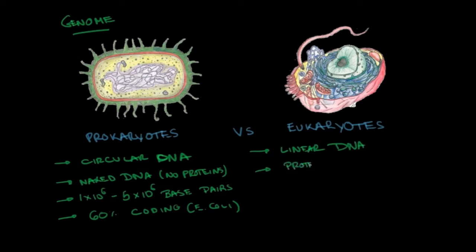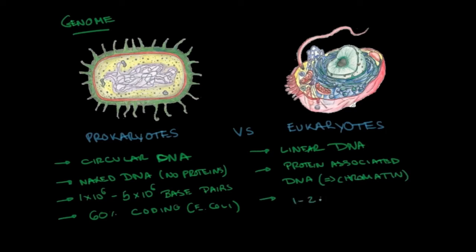In eukaryotes, we see linear DNA that is protein-associated — bound to histones — and we call this chromatin. Another important point about the eukaryotic genome is that only 1 to 2% of the DNA is coding DNA. So only 1 to 2% of your DNA will be coded into proteins.